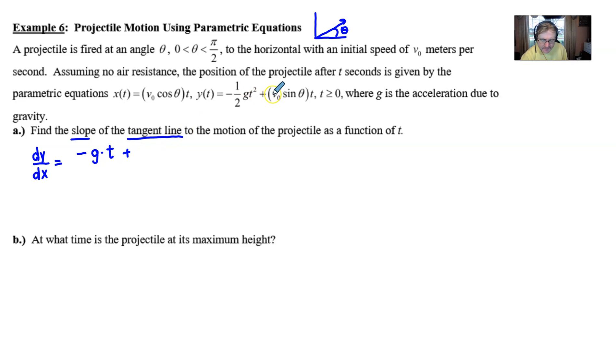And then we add to that, well we notice that this v sub not times sine theta, this is just really acting as a constant in front of our variable t. So when we take the derivative of that constant times t, we would just get that constant.